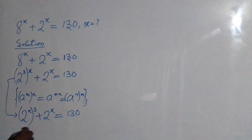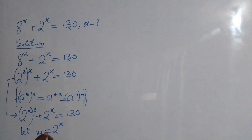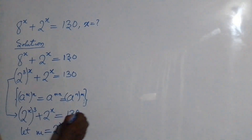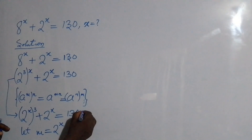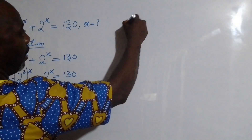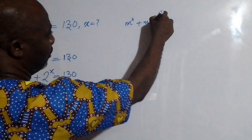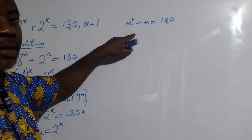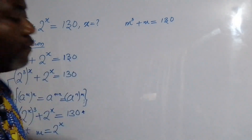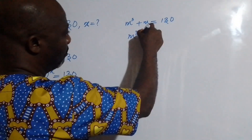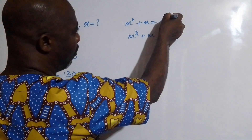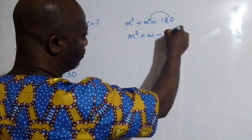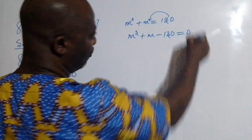Next, let m equal to 2 to the power of x. So if m is equal to 2 to the power of x, then this equation becomes m to the power of 3 plus m equal to 130. This is cubic. Now I am going to write it in the standard cubic form: m cubed plus m minus 130 equal to 0.